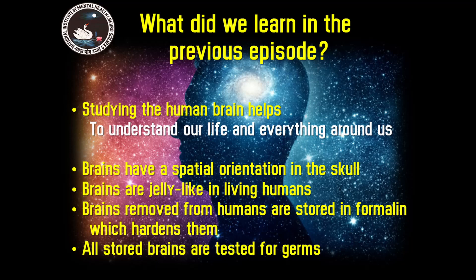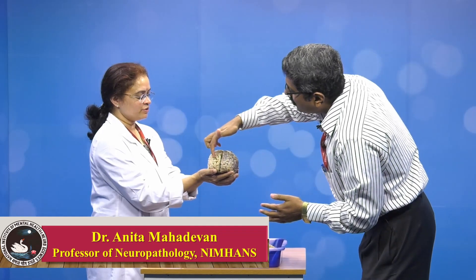In the previous episode, we learned that studying the human brain helps us understand our life and everything around us. We also learned that brains have a spatial orientation in the skull, they are jelly-like in living humans, and when removed they are stored in formalin for long-term storage, which actually hardens them. All stored brains are tested for germs such as bacteria and viruses.